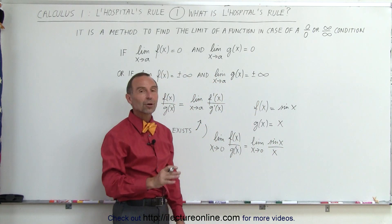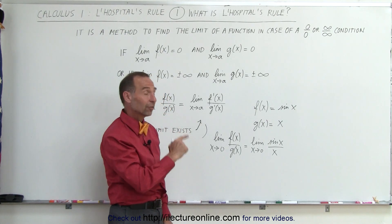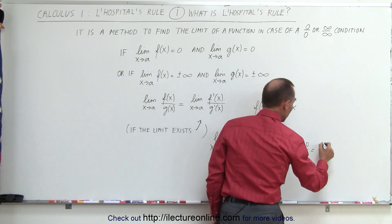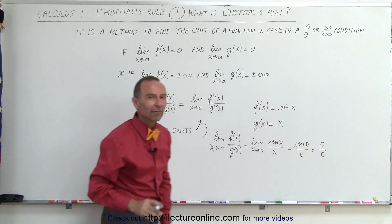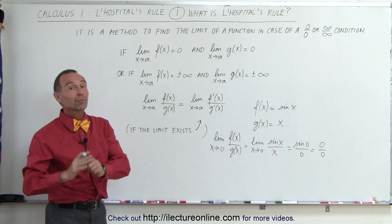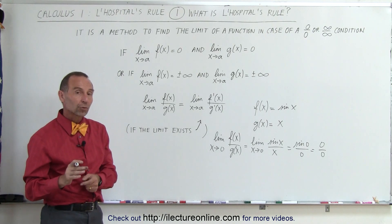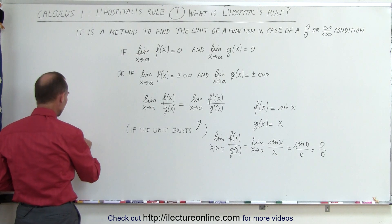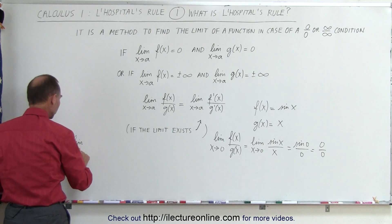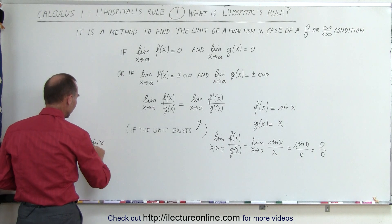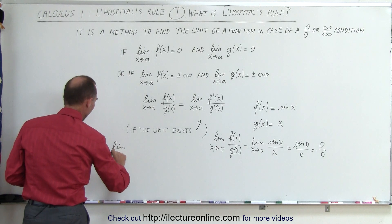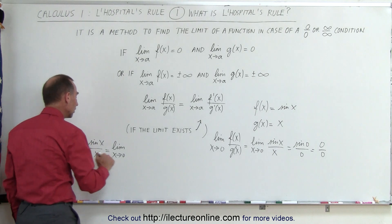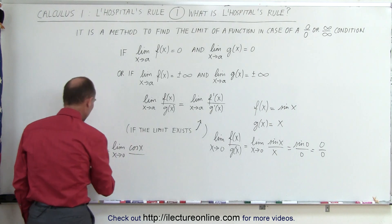Most of us have seen this before and we already know the answer, but if you were to plug in the values — for example, if you evaluated sine of 0 divided by 0 — well, the sine of 0 is 0, so we get 0 divided by 0, which is of course undefined. Now we know the answer is 1, but let's use L'Hôpital's rule to confirm that. We're going to take the derivative: the limit as x approaches 0 of sine of x divided by x equals the limit as x approaches 0 of the derivative of the numerator over the derivative of the denominator. The derivative of the numerator is cosine of x, and the derivative of the denominator is simply 1.